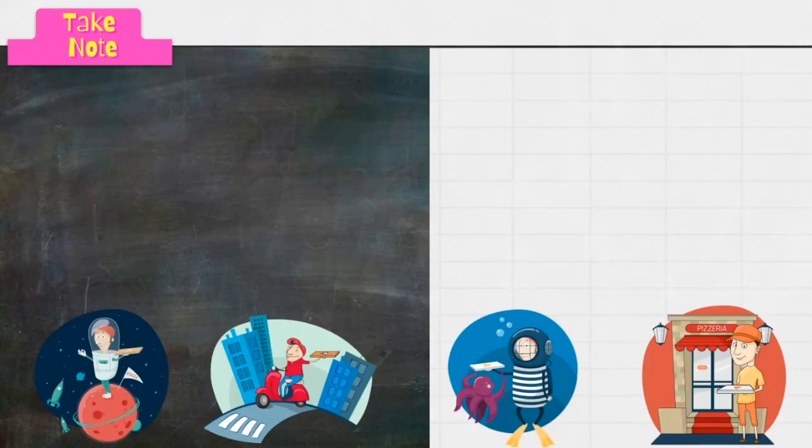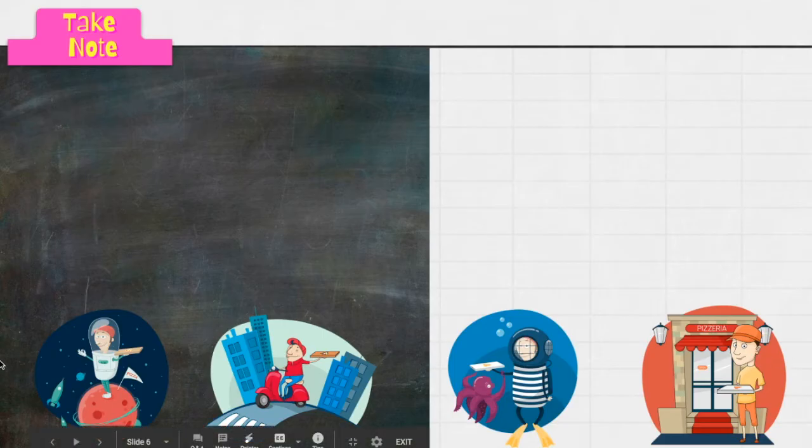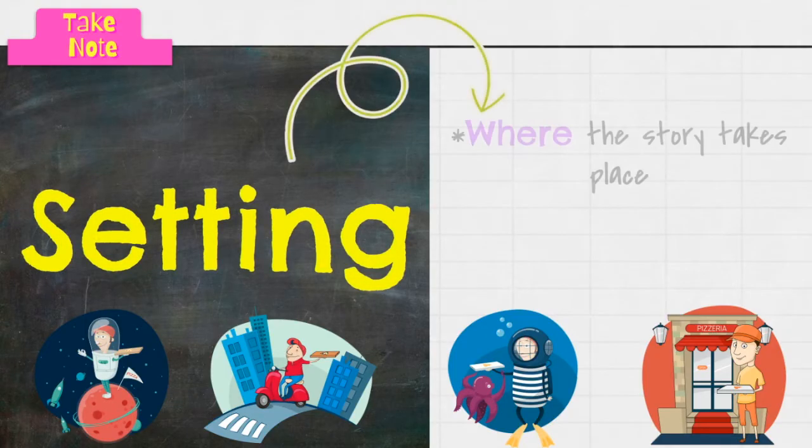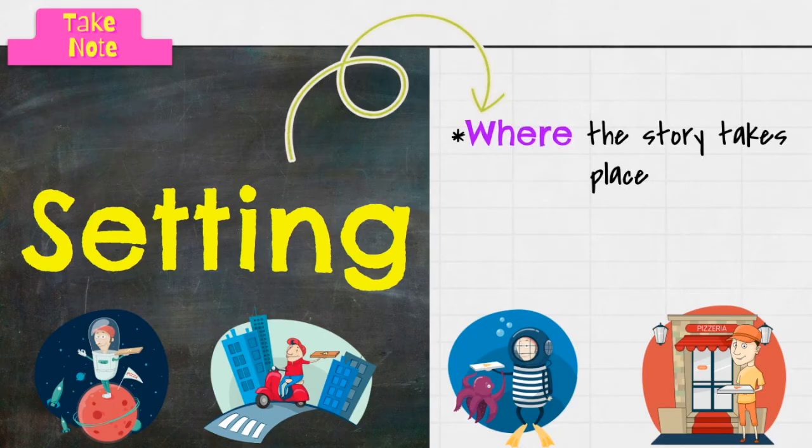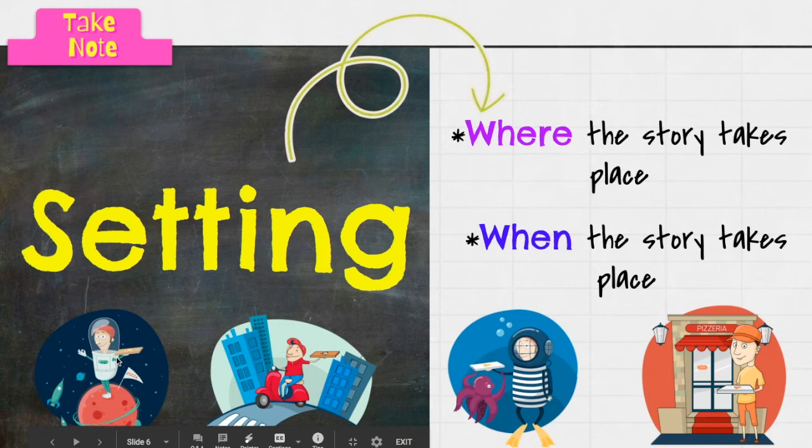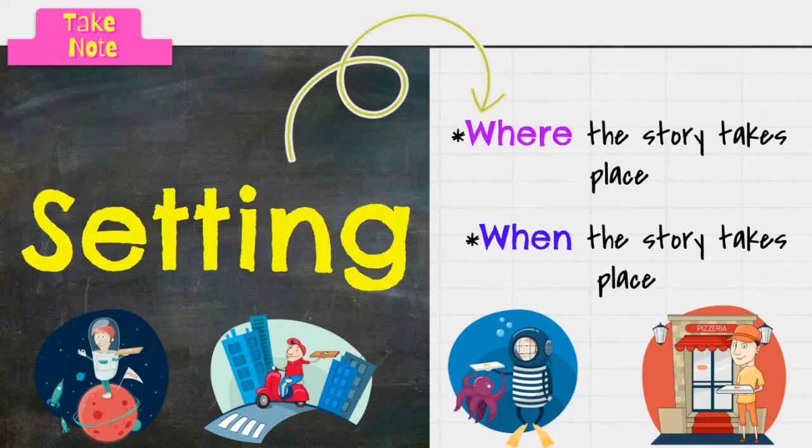Looking at the bottom down here, you can probably guess what we are getting ready to talk about—what story element. And that is setting. Setting is where the story takes place. We probably already know that, but sometimes we forget it's also when the story takes place. Does it take place in the early 1800s, or does it take place in the future, like this dude right here delivering pizza on a different planet? I don't know. So setting is not only where but it's when the story takes place.